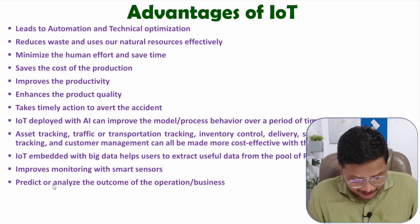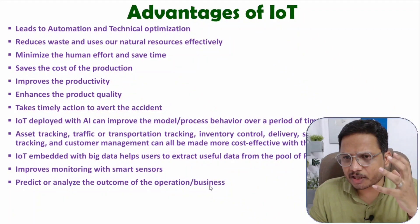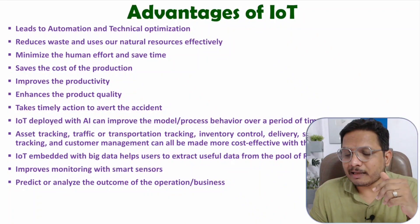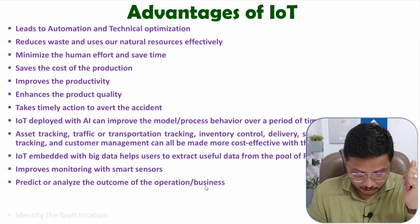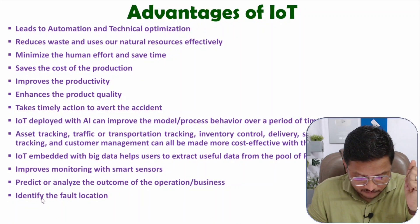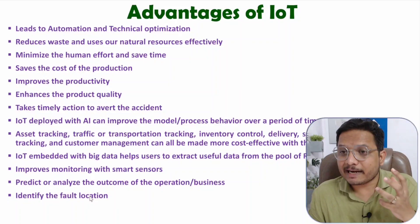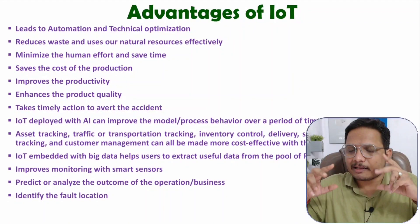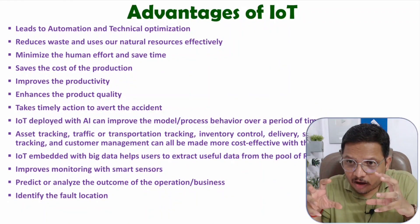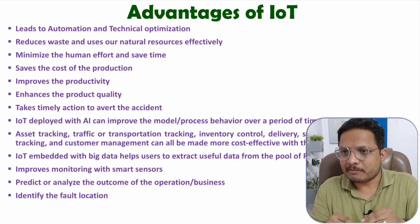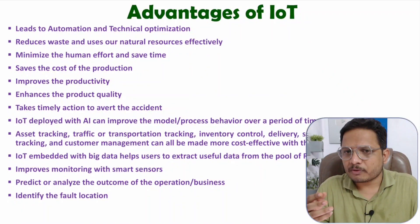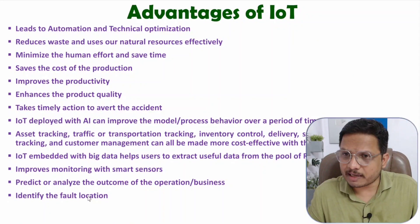With prediction and analysis of the outcome of operations and business, using deep learning we can have prediction and we can analyze our outcome as well. If you can predict and analyze your outcome, it will be helping you in your business. IoT is also used to identify fault locations. If some faults are there, we can identify them, because everything is structured and all the data is available on the cloud. So tracking of elements is quite easy in IoT. In manual control, a human would have to observe everything, but if all the data is available in front of you, then identification of fault location becomes easier.